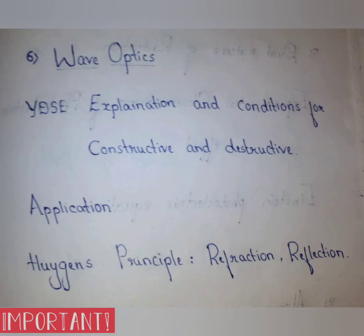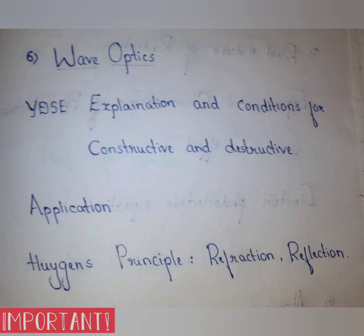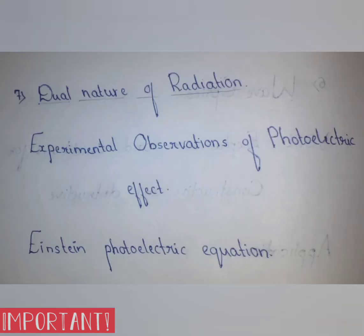From Chapter 6, Wave Optics, the most important and repeated topics are Young's Double Slit Experiment (YDSE) — its explanation and conditions for constructive and destructive interference — as well as applications of Huygens' Principle including refraction and reflection.